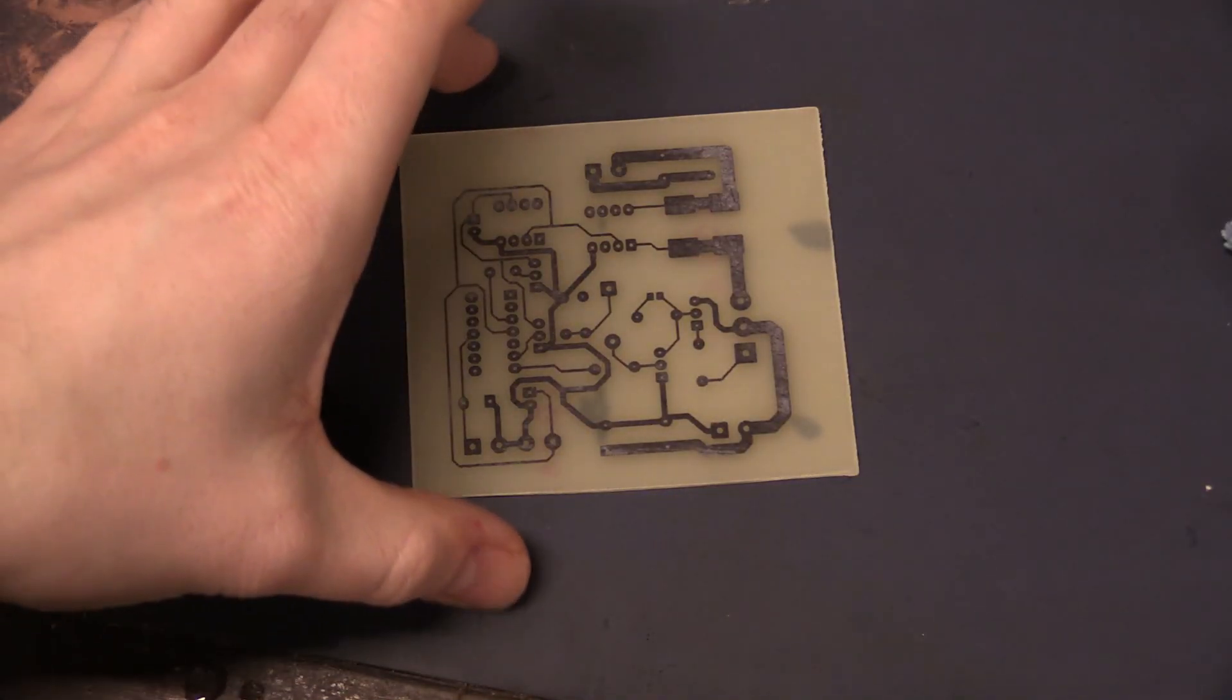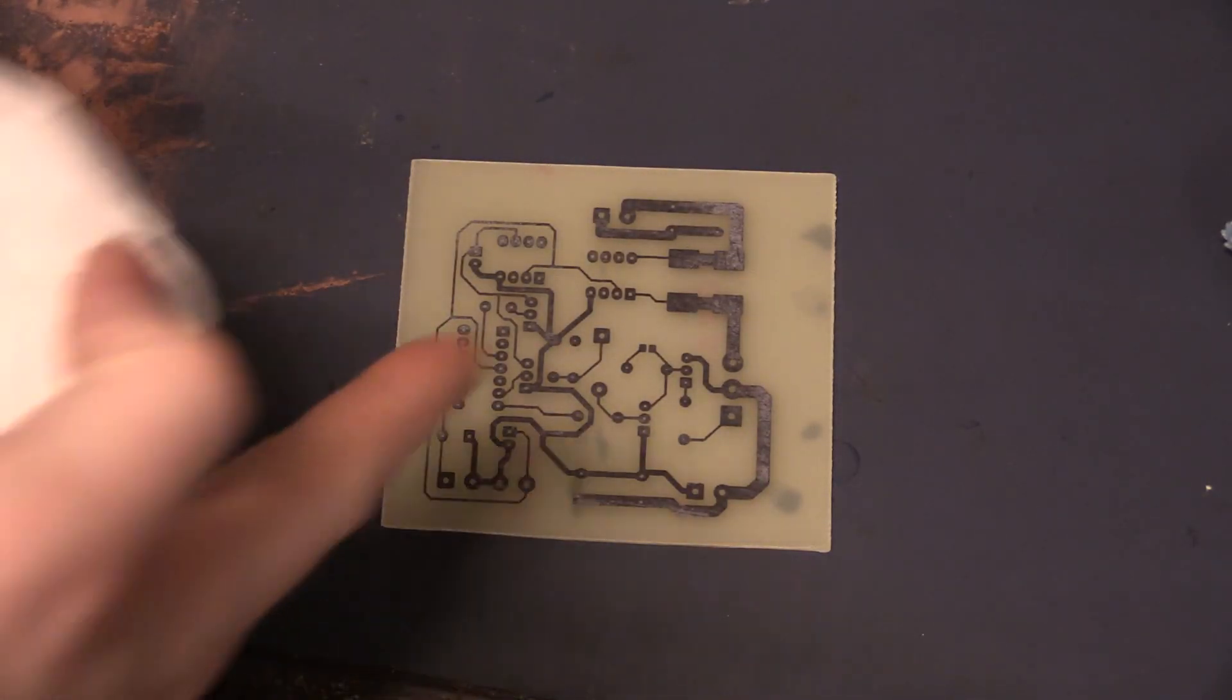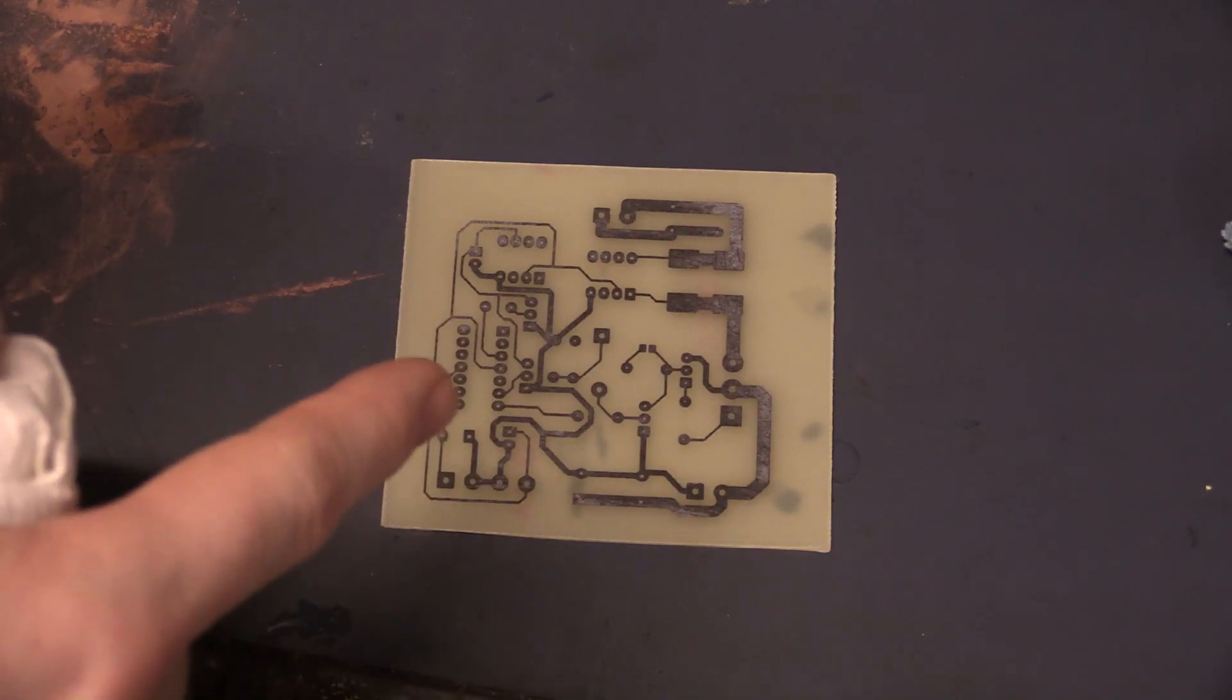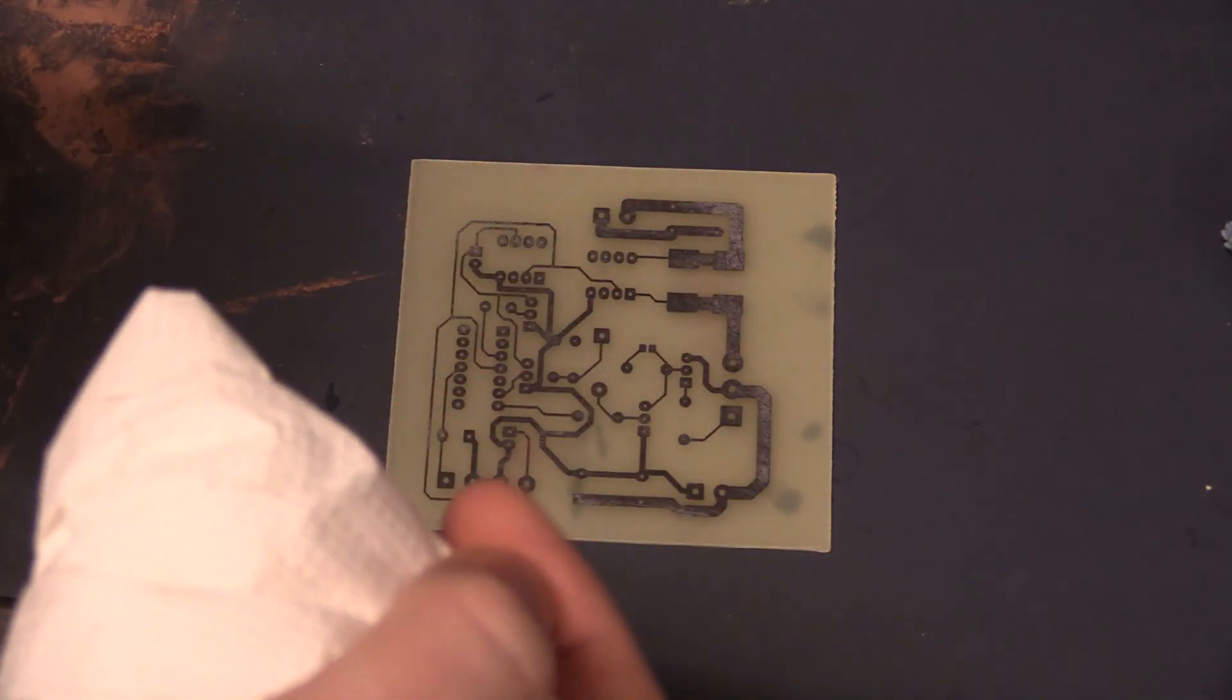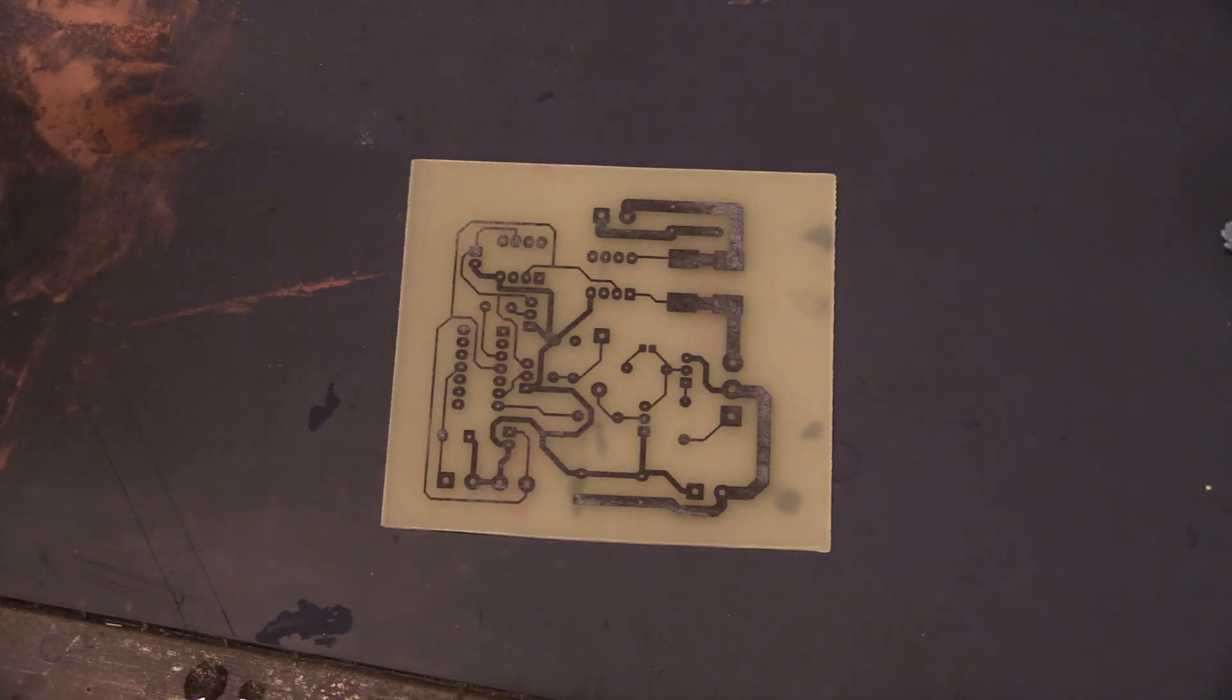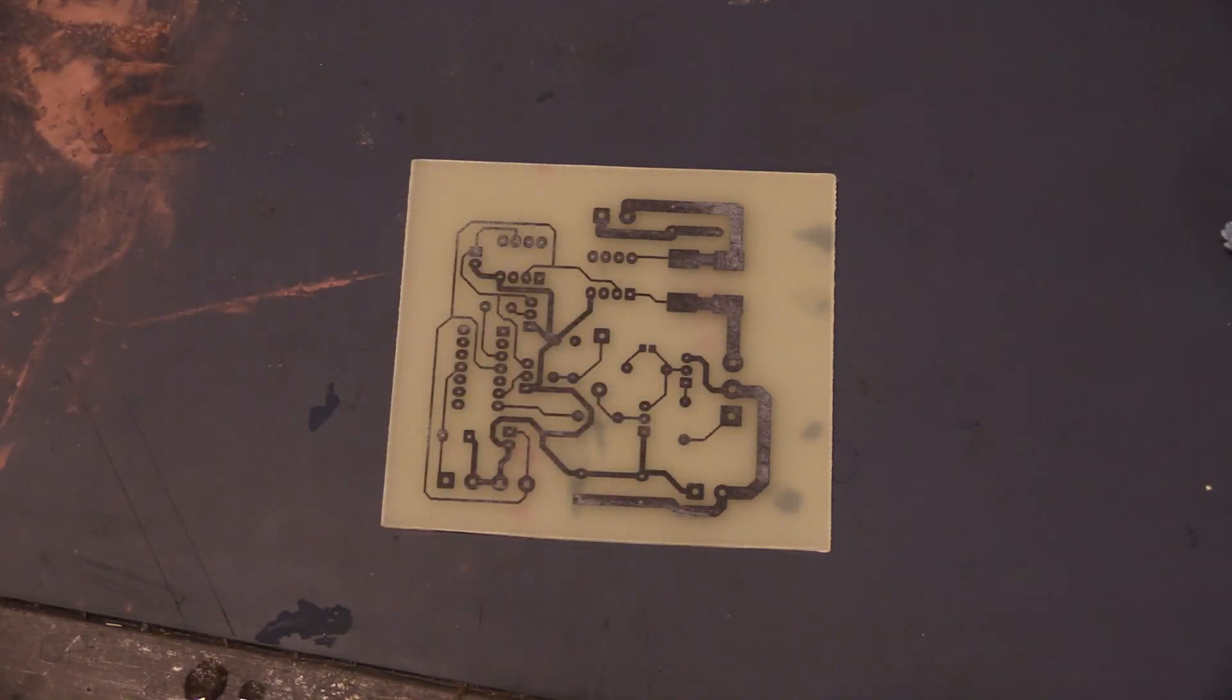Once you have rinsed it with plenty of water you can remove the toner by rubbing it with acetone. If you're not going to use the PCB right away it's a good idea to leave this on because as soon as you remove it the copper starts to oxidize. And that makes it harder to solder so it's best to remove the toner right before you plan to use the board. You can easily drill it with the toner on top. You can just put the acetone on a paper towel and then wipe it off.